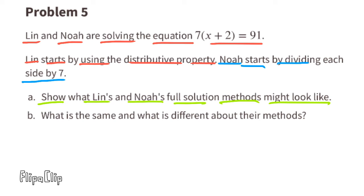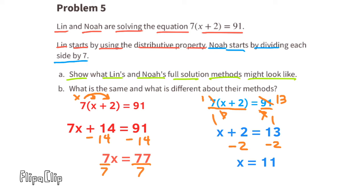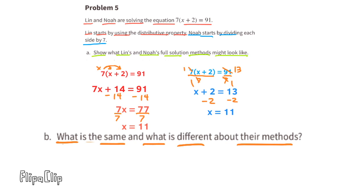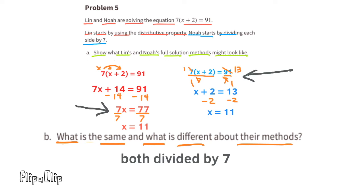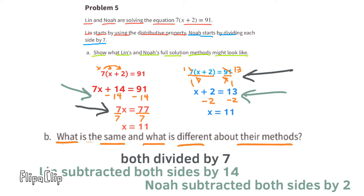Problem number 5. Lynn and Noah are solving the equation 7 times (x plus 2) equals 91. Lynn starts by using the distributive property; Noah starts by dividing each side by 7. Part a: showing both methods — on the left, distribute like Lynn; on the right, divide both sides by 7 like Noah. Part b: What is the same and different? Both divided by 7 and arrived at x equals 11. Lynn subtracted 14 from both sides; Noah subtracted 2 from both sides.